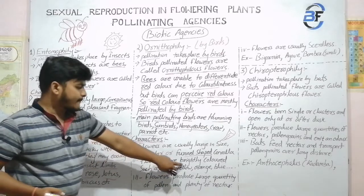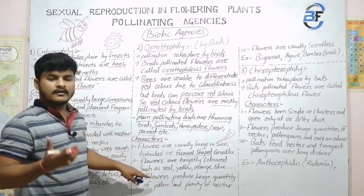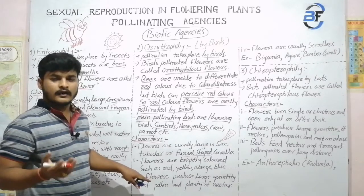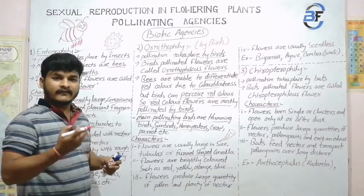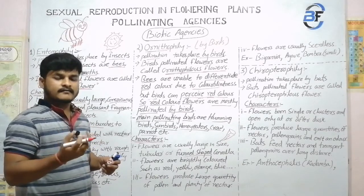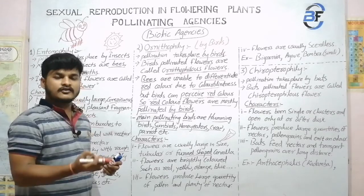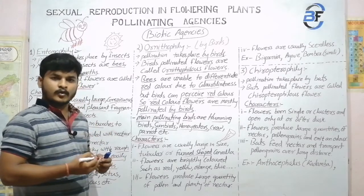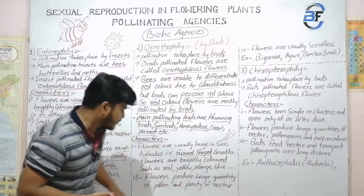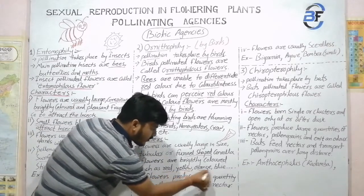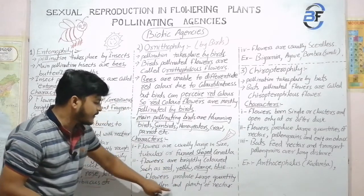Flowers are brightly colored — the bright colors are mostly attractive in nature. They may be red, yellow, or blue in color because these types of colors are mostly reflective, and these colors are reflected over a long distance. So at long distance, birds are attracted towards the flowers to eat the nectar and pollen. Flowers produce large quantities of pollen and plenty of nectar.